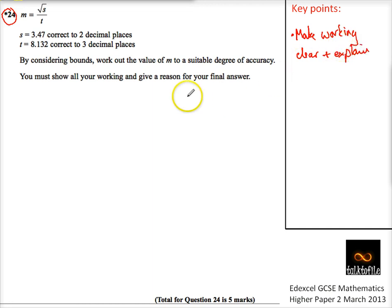And in fact, it does say that in the last bit. So it gives us a formula: m is the square root of s divided by t, and then it says that s is this and t is that, and each one has been rounded to a number of decimal places. So this is all about bounds.